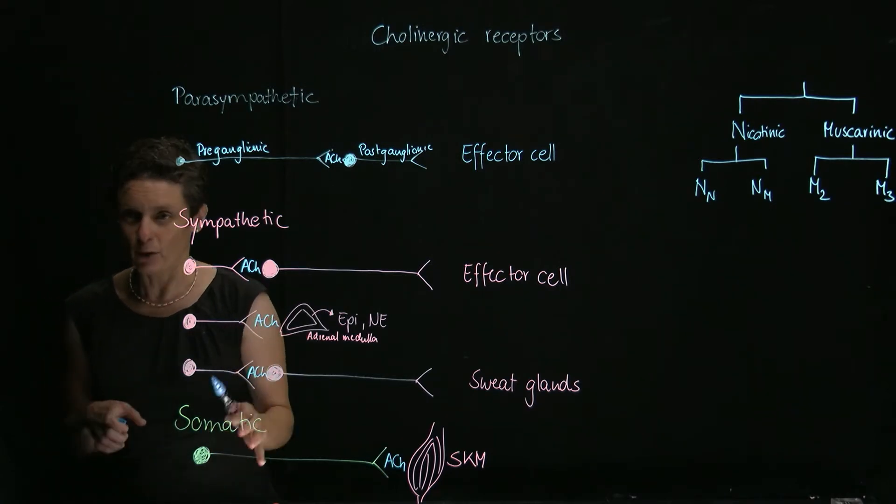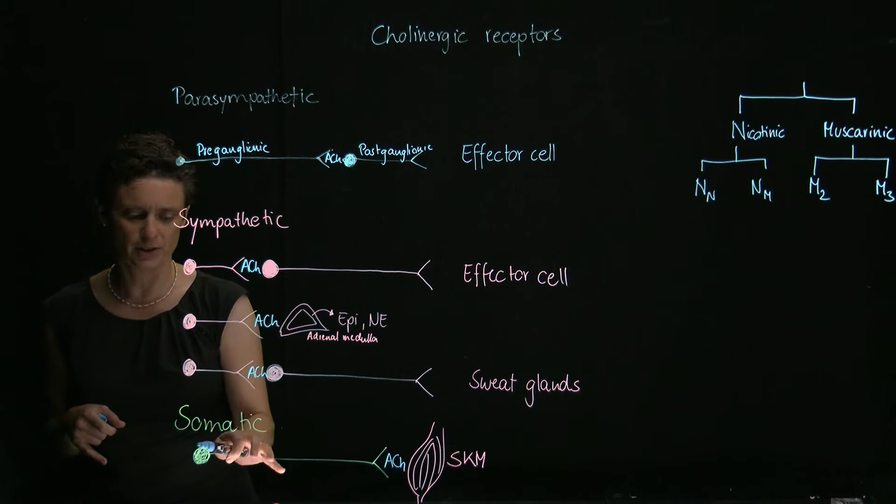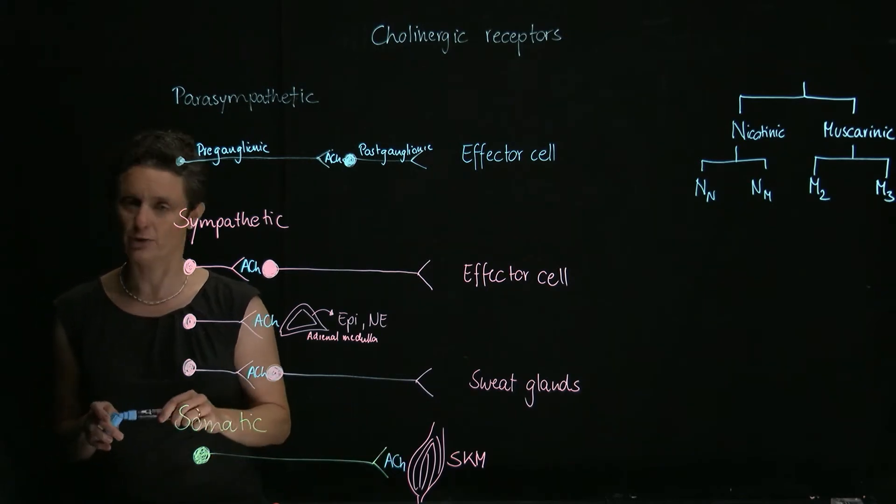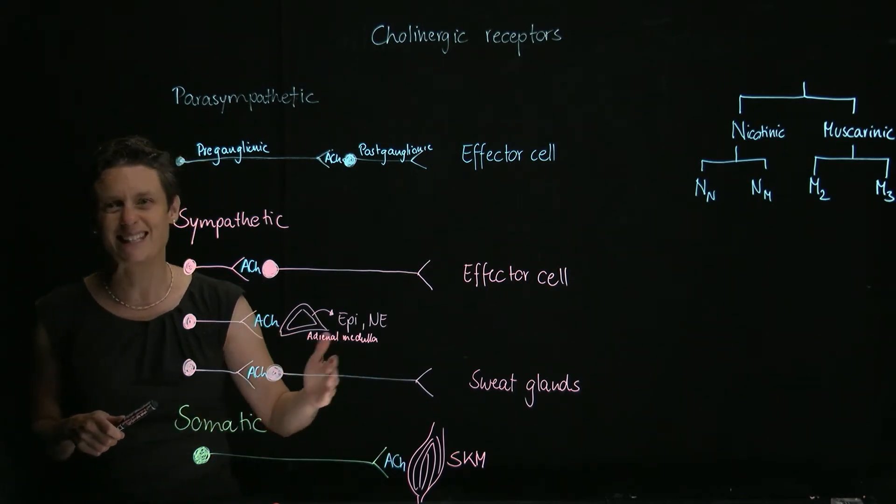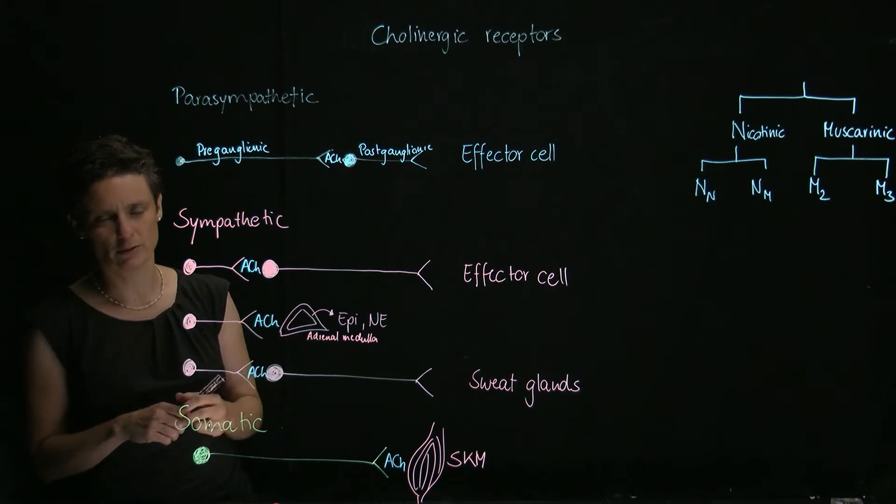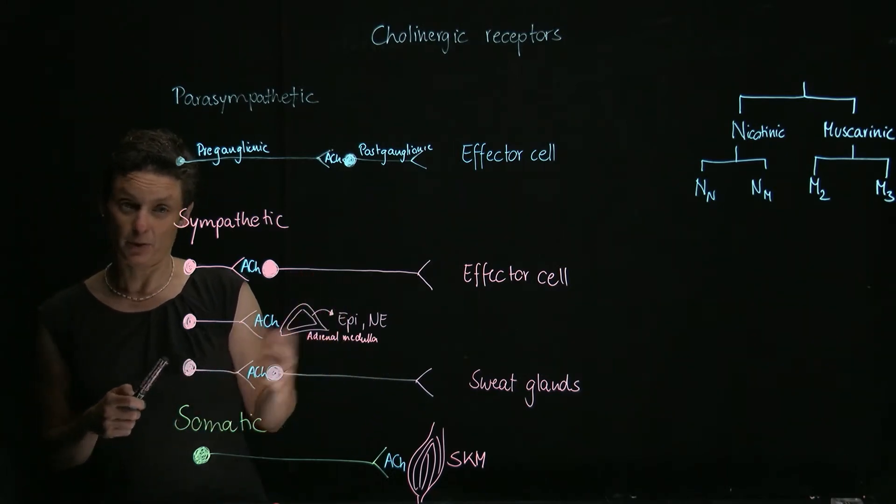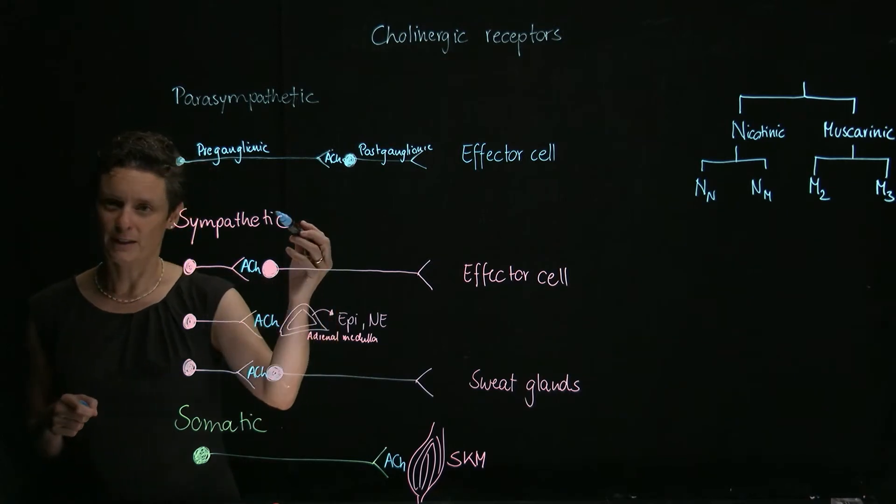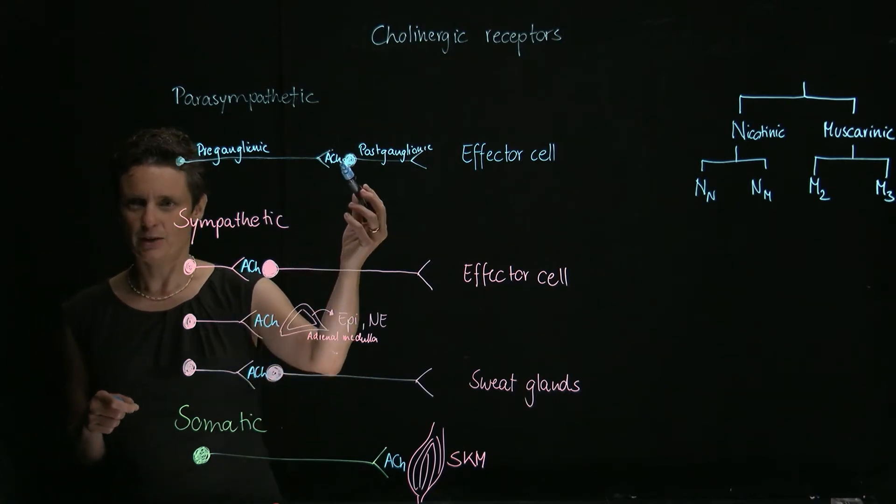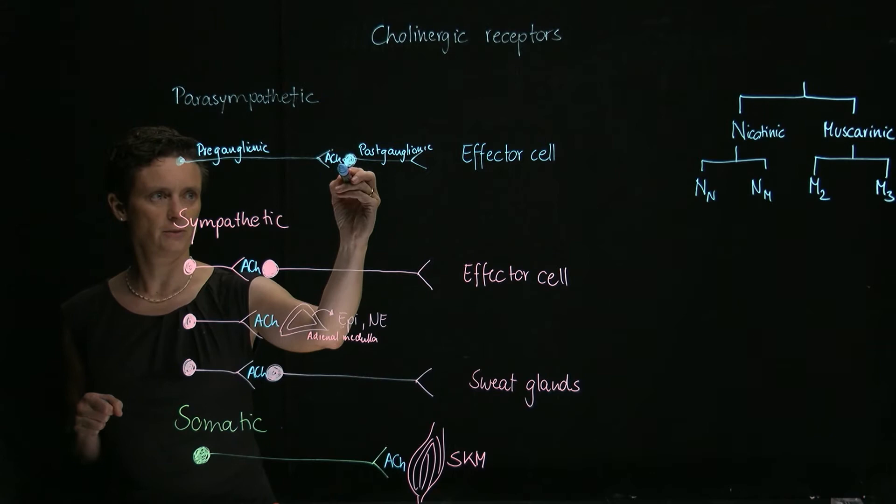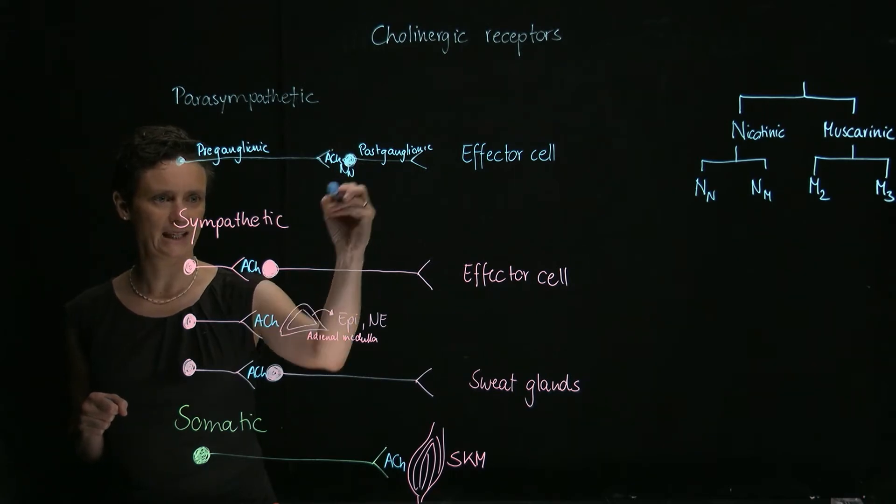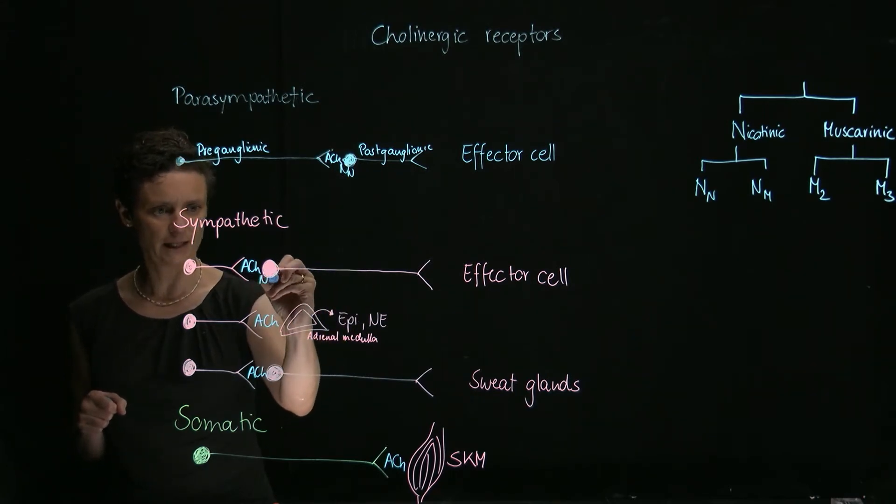And we're always going to think about the somatic nervous system, which also releases acetylcholine. So where are these NN receptors where acetylcholine works on? They are on neurons in the peripheral ganglia, on the post-synaptic somas of the post-synaptic neurons. We find them here and here.